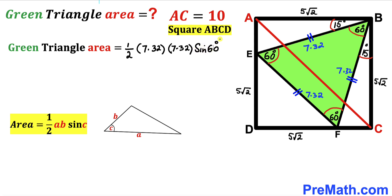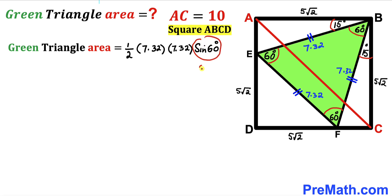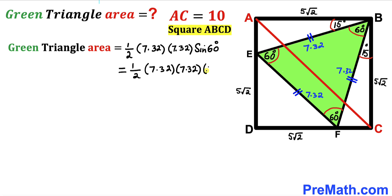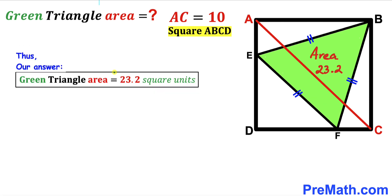We know that sine of 60 degrees is approximately 0.866, so the area = ½ × 7.32 × 7.32 × 0.866. Multiplying and simplifying everything on the right-hand side gives us 23.2 square units. So after all the calculations, the area of green triangle EBF turns out to be 23.2 square units, and that's our final answer. Thanks for watching and please don't forget to subscribe to my channel for more exciting videos.